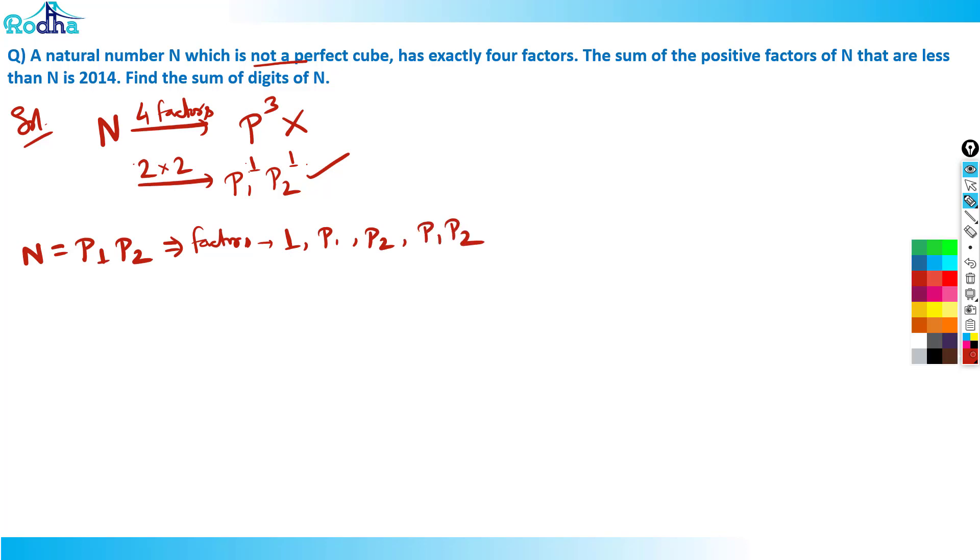For example, take six. If N equals six, that means two times three, p1 times p2. How many factors does six have? One, then the prime number two, then the other prime number three, and then combined this is six, which is p1 times p2.